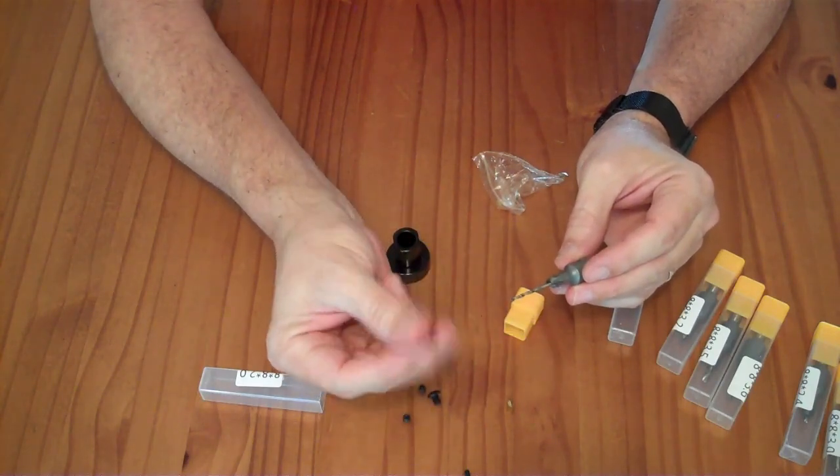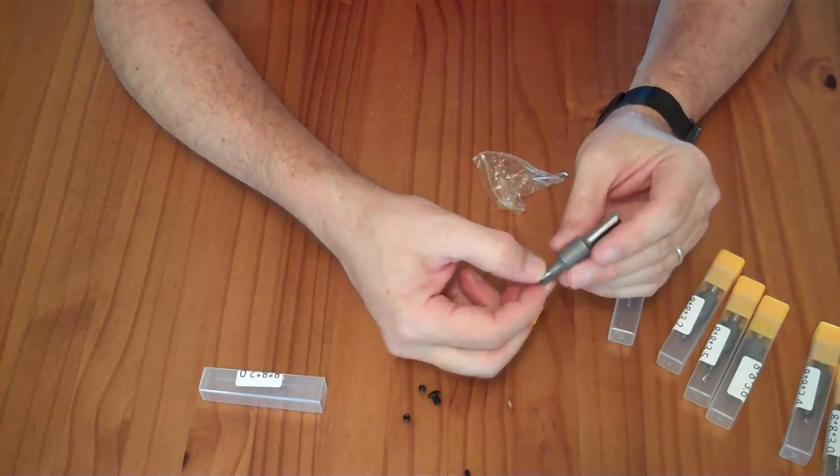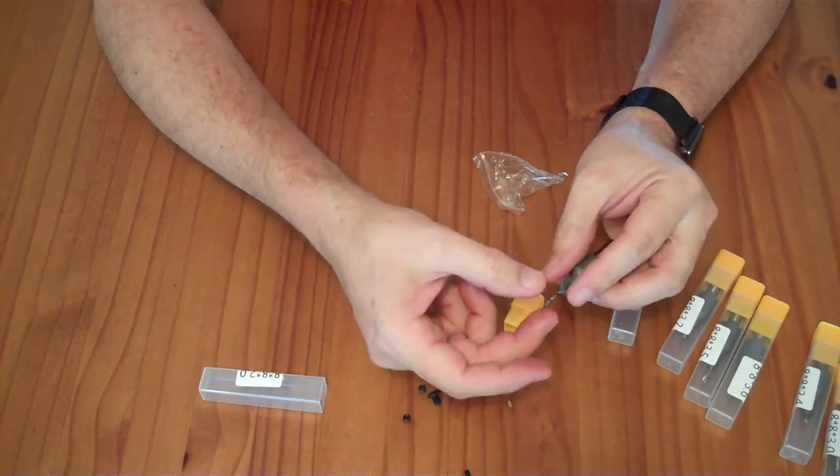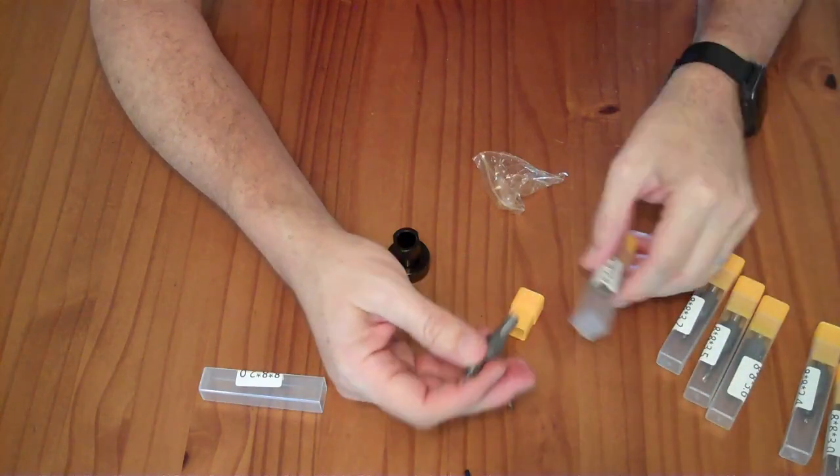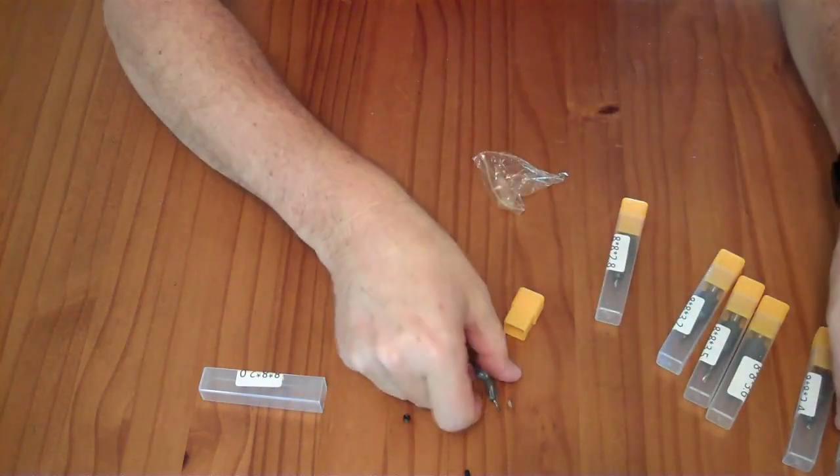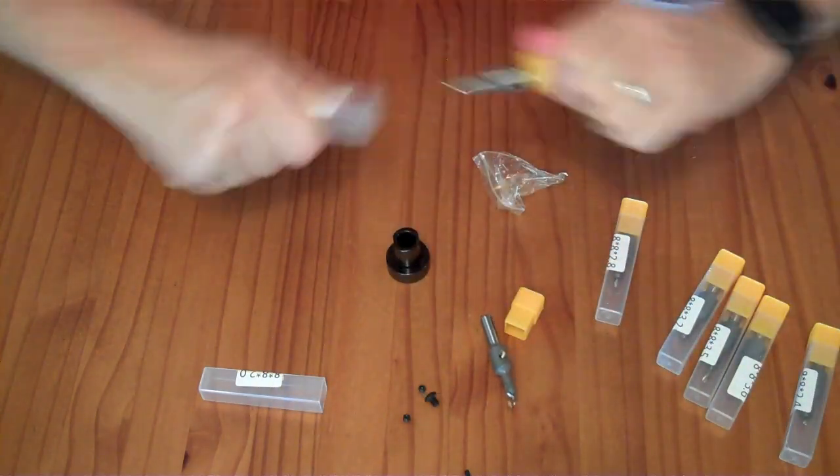It comes shipped with a little bit of tool oil to prevent rust, so you'll want to be careful with that when you get it out. And then you basically just have to pick the countersink that is appropriately sized for the head of your screw.